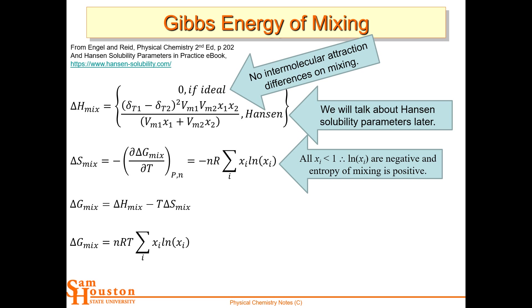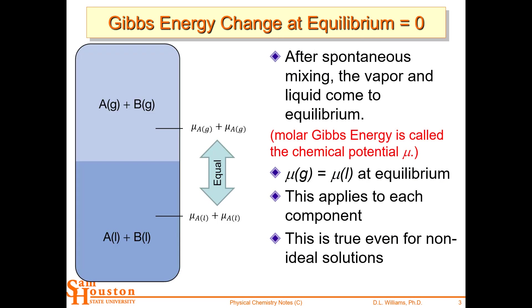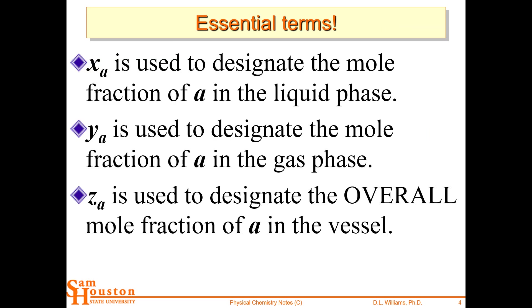Because the enthalpy is zero for an ideal solution, the Gibbs energy of mixing is just based on those mole fractions. You'll see Mu throughout the book and in other texts — they talk about chemical potential, which is just the molar Gibbs free energy. You've got the same chemical potential when you're at equilibrium: the gas phase and the liquid phase have the same chemical potential. There's no change in delta G going from vapor to liquid, and that applies to each component, even for non-ideal solutions.